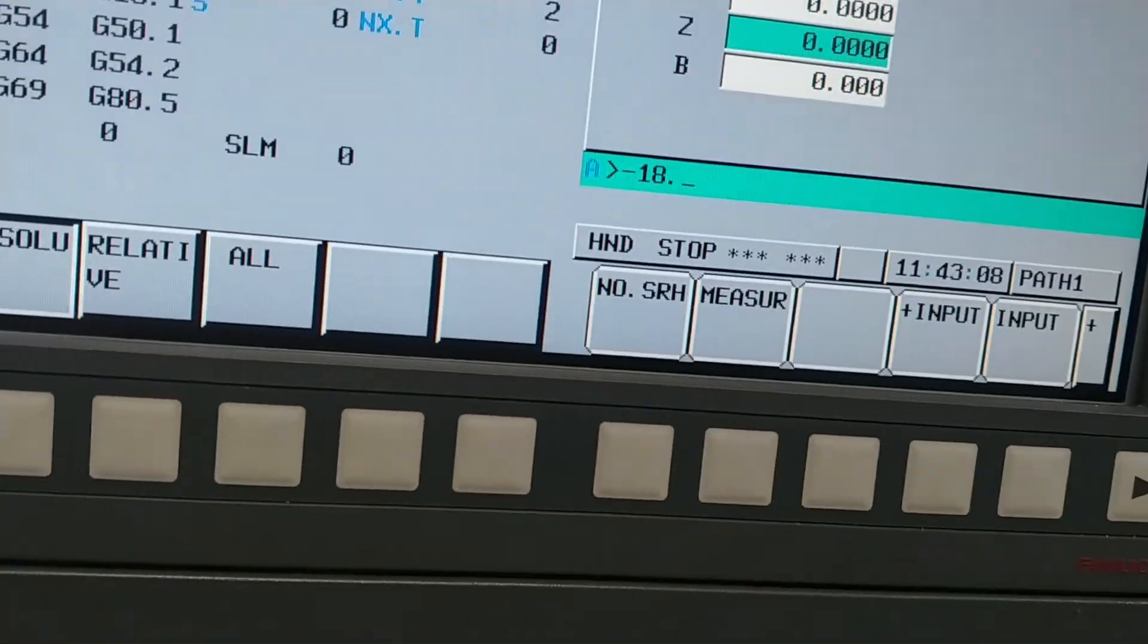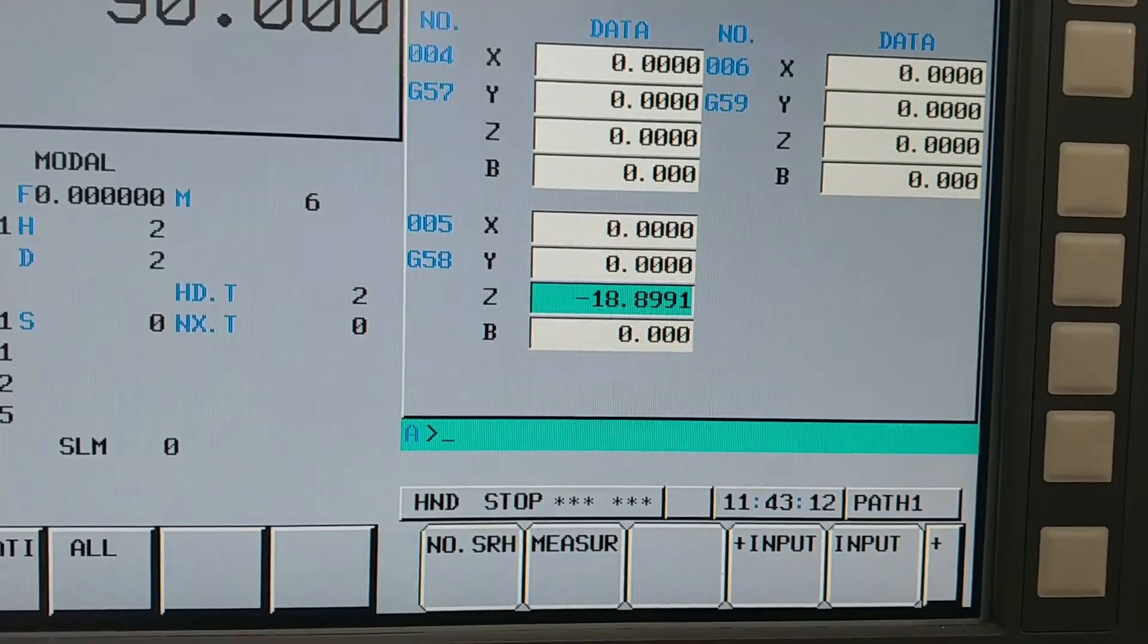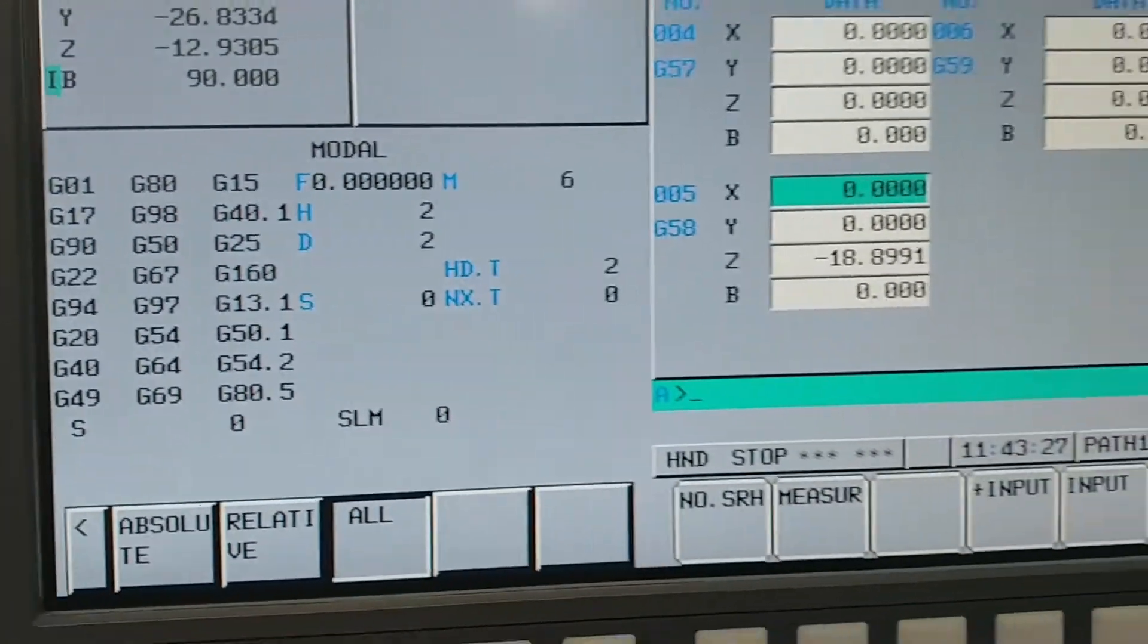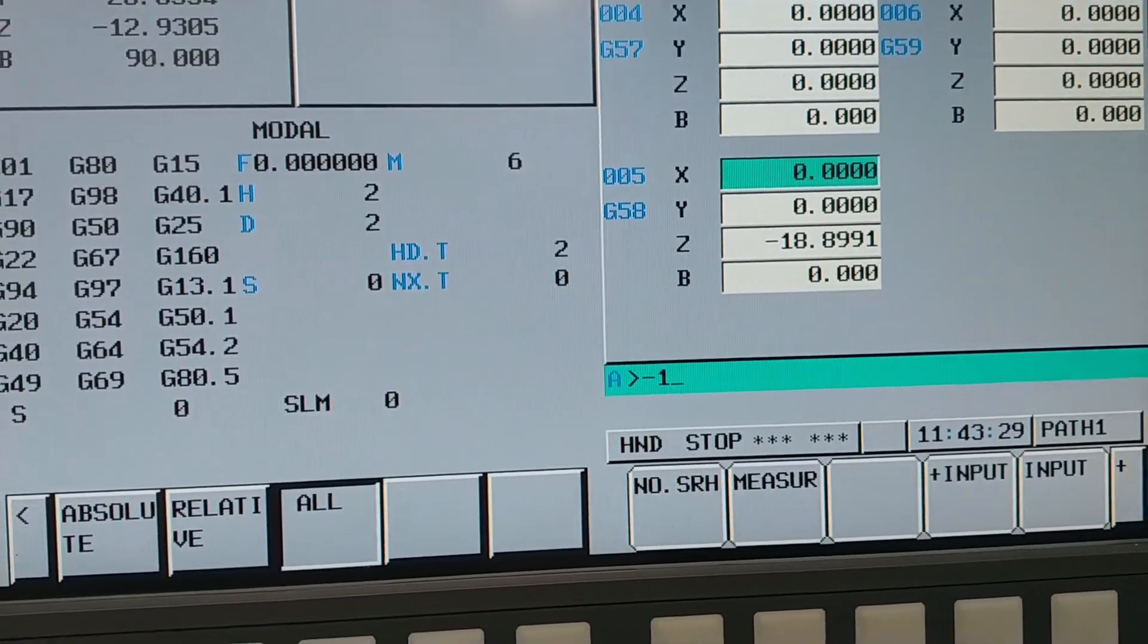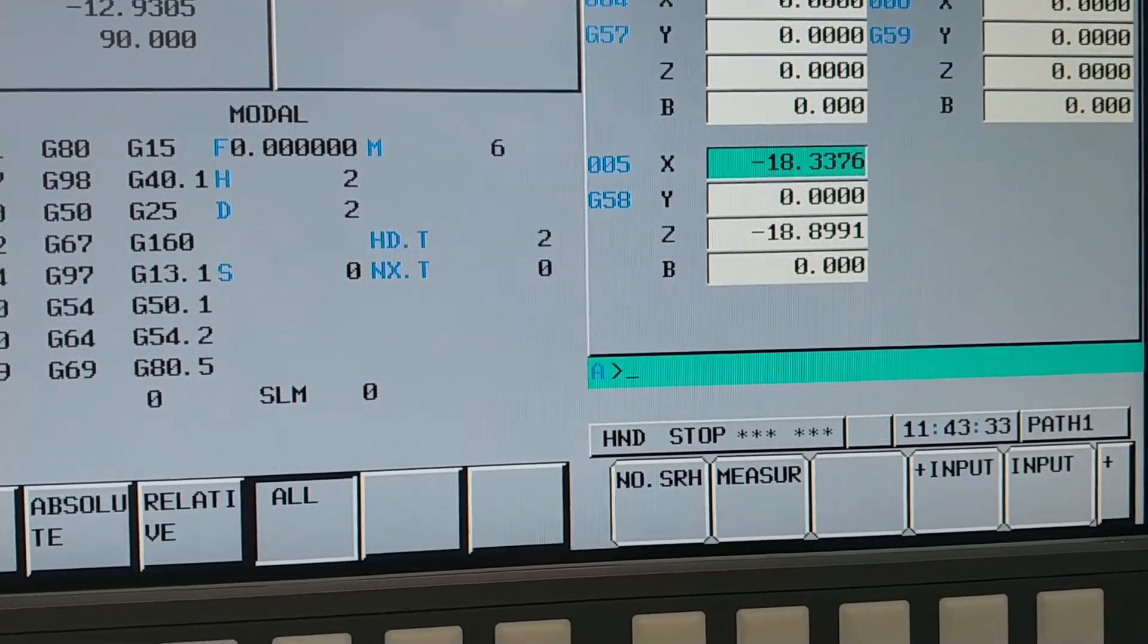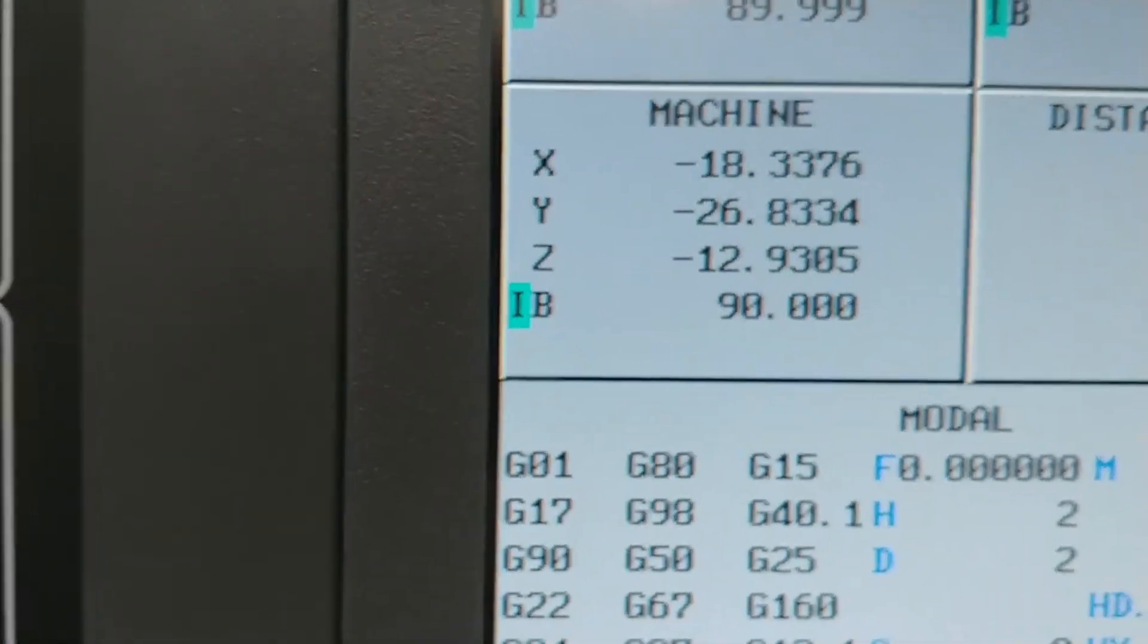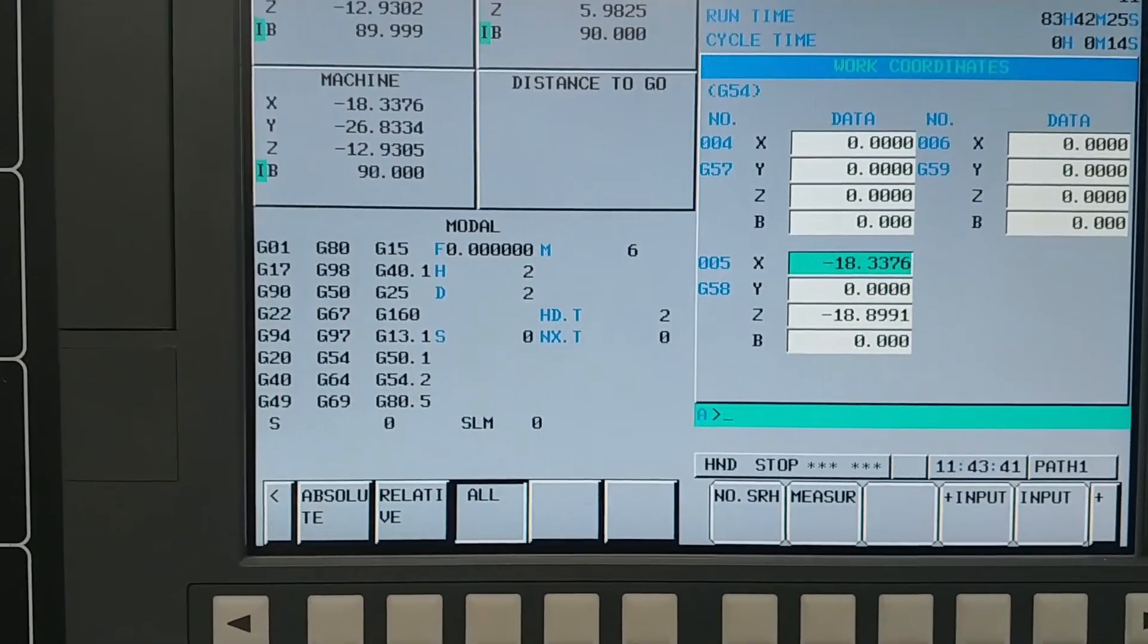Type this number into the Z coordinate of any work offset. With the master tool still in the same XY position, return to the position page and record the X and Y coordinates from the machine coordinate readout. Type these numbers into the X and Y coordinates of the same work offset you are using for Z.